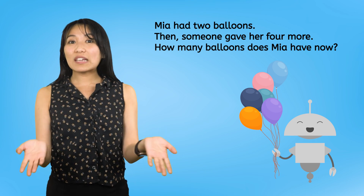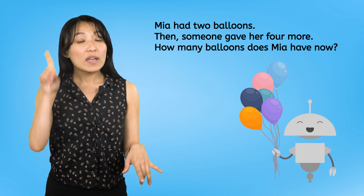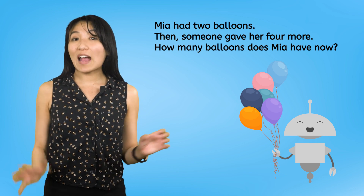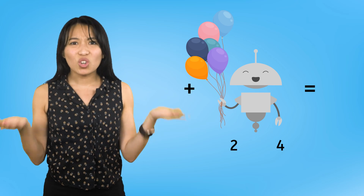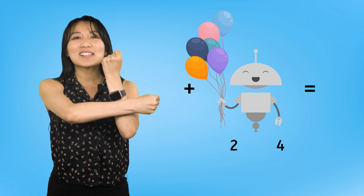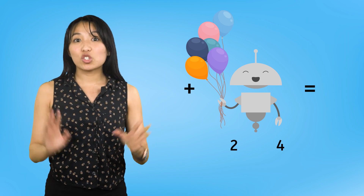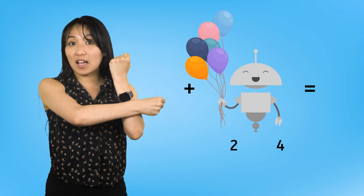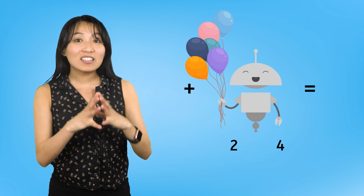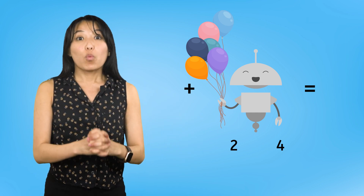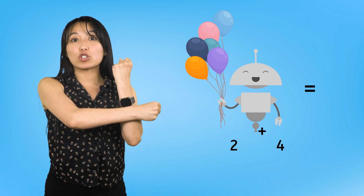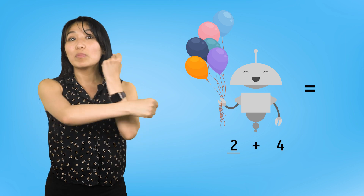To turn this number story into a number sentence, we have to think about which numbers we are adding together. Mia has two balloons, and then someone gave her four more. Two and four are the parts of our number sentence. The plus sign is the symbol that tells us what to do with two numbers — when we see the plus sign, we know we are adding the numbers together. So when we put this symbol in between our two parts, it says two plus four.